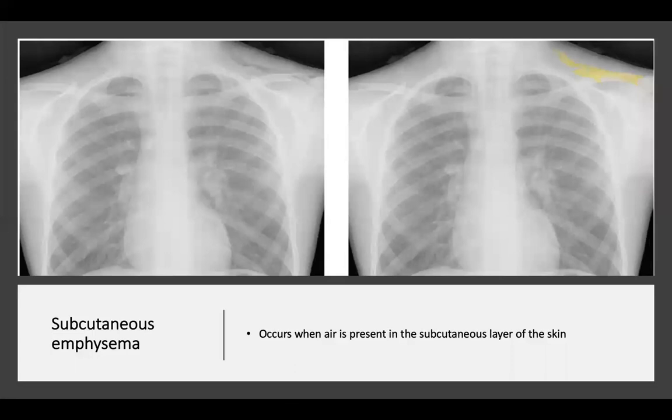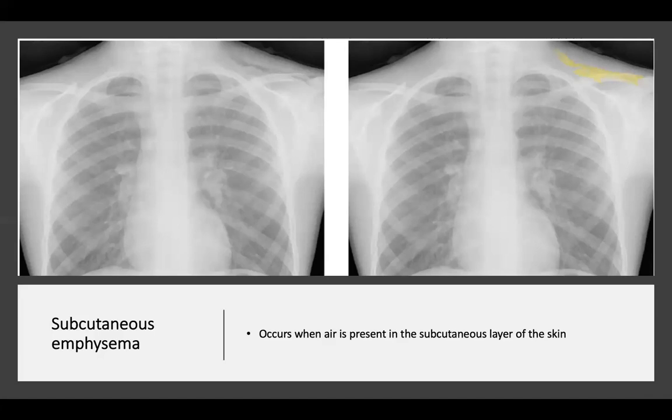That showed an example of subcutaneous emphysema — the abnormal distension of tissues caused by retention of air. Subcutaneous emphysema occurs when air is present in the subcutaneous layer of the skin, appearing as blackness where there should be whiteness on a radiograph. Causes include trauma, pneumothorax or an improperly functioning chest drain, and esophageal rupture. In this case the patient was asthmatic and coughed violently, rupturing a bulla or bleb, allowing air to escape into the mediastinum and track upwards to the left shoulder. The subcutaneous emphysema is marked in yellow on the right radiograph.